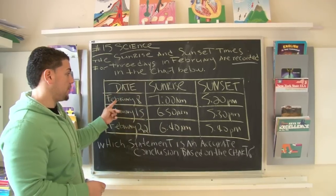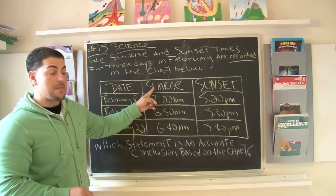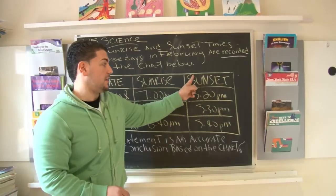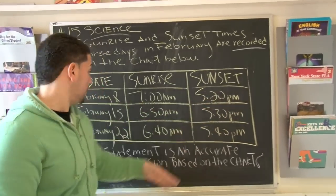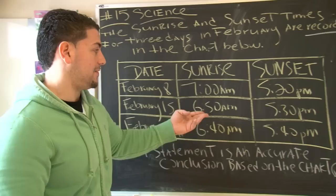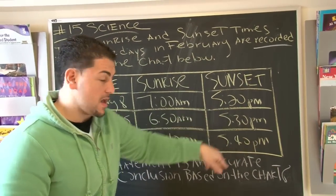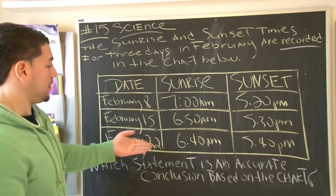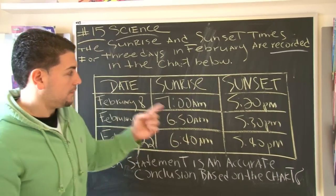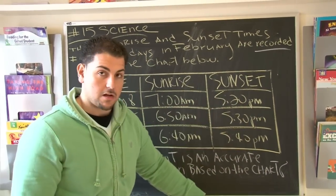Look at it. You got the date - February 8th, the sun came out at 7 a.m., and then the sun went down at 5:20 p.m. On February 15th at 6:50 a.m., the sun came up, sunset went down 5:30 p.m. February 22nd, 6:40, the sun comes up, 5:40, sun goes down.